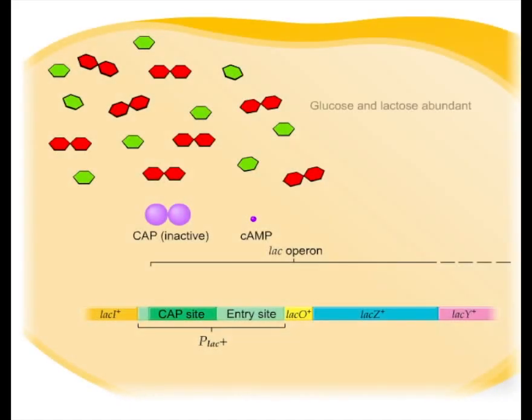When glucose is abundant in the cell, catabolite repression occurs regardless of the concentration of lactose also present. High levels of glucose cause the levels of cyclic AMP to be reduced.